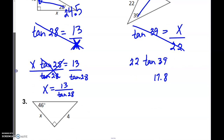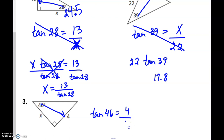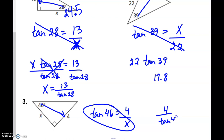There's one more problem for you to try. Stop the video and give this one a try. We set up the tangent of 46 as the opposite 4 over X. Like the first problem, these two switch places, so we take 4 divided by the tangent of 46, and rounding to the nearest tenth, we get 3.9.